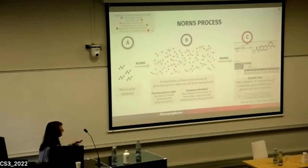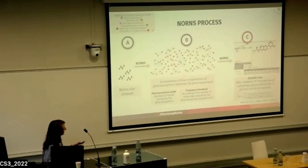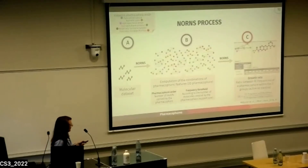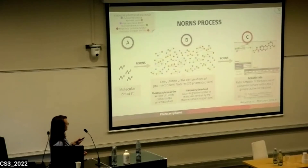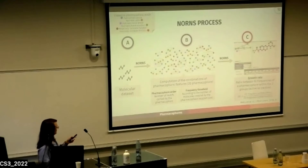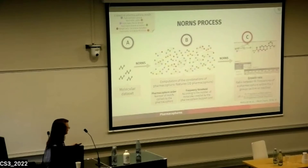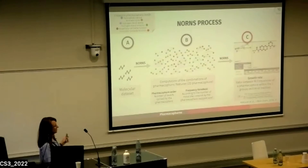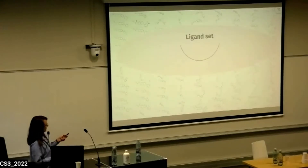Here is an example of a representation from NONS. NONS gives you the topological pharmacophore — for example this one bears five motifs. We can see the superimposition of the pharmacophore with a covered molecule, and the list of molecules covered. Green molecules are active towards BCR-ABL, red are inactive. NONS also computes a metric called the growth rate: the ratio between the frequency of a pharmacophore within the active group versus the inactive group.